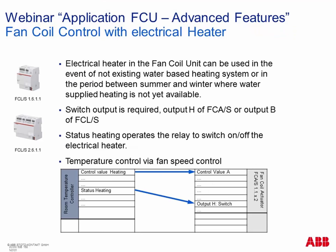Another option is to run an electrical heater with our fancoil actuators. In some cases — for example where cooling is mainly needed and heating only a few times per year — it makes no sense to have a water-based heating system. You take only an electrical heater in your fancoil unit, switch it on and off electrically, and the fan heats the room together with this electrical heater. You can use the output H in our fancoil actuators FCAS, which is a relay output only. You connect the electrical heater here, and via status heating as a group object, you activate this channel, switch on the electrical heater, and control temperature via fan speed. Output H is specifically made for this purpose.